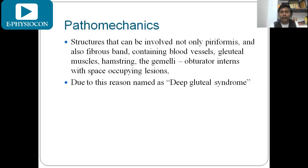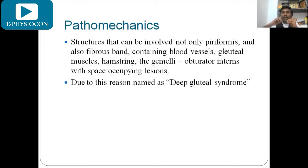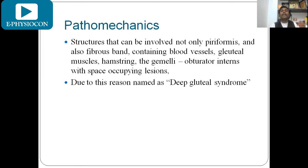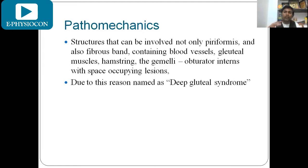The pathomechanics involve multiple structures: not only the piriformis but also fibrous bands containing blood vessels, gluteus maximus, gluteus medius, hamstring, gemellus, and obturator internus — all together occupying the space and compressing the sciatic nerve. This is why it is named deep gluteal syndrome, also known as pseudo sciatica.